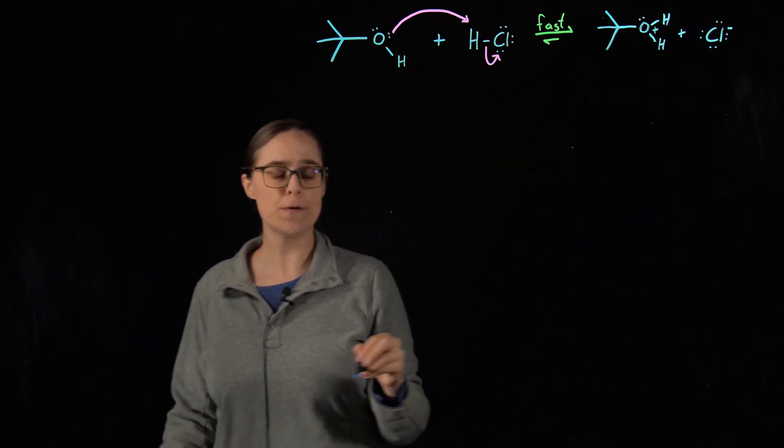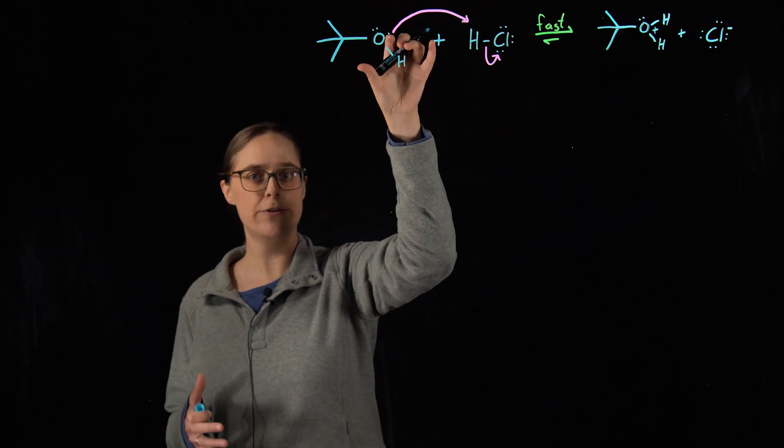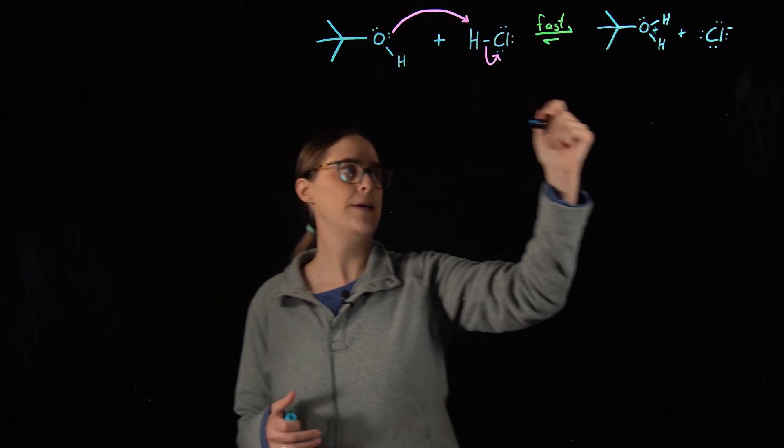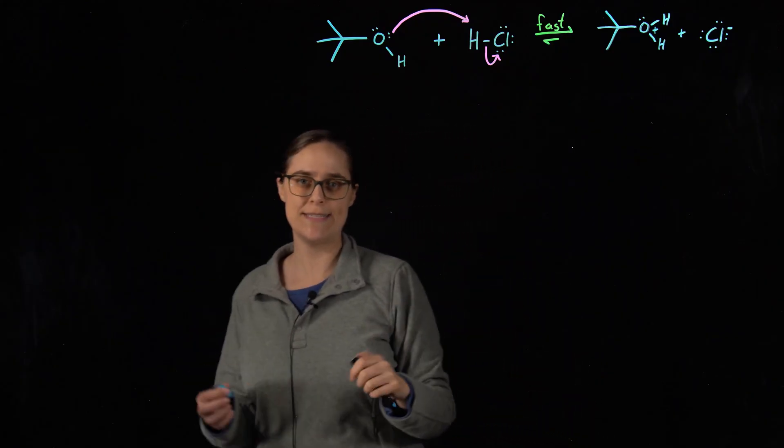And the chloride has a negative charge and four lone pairs of electrons on it. Notice that our overall total charge is the same. Here nothing is charged, so the total charge is zero. Here we have a plus one charge and a minus one charge. That's still a sum of zero.